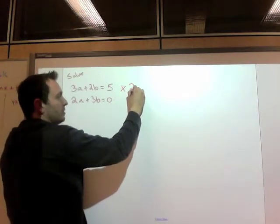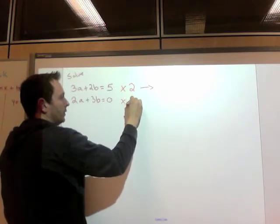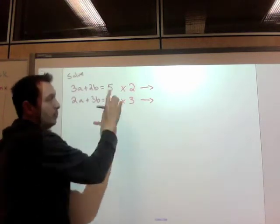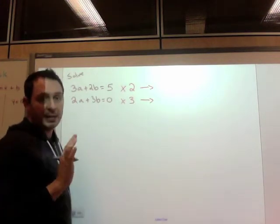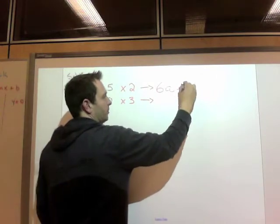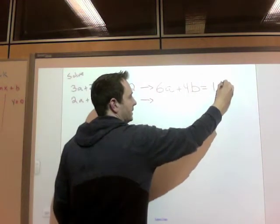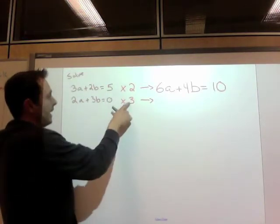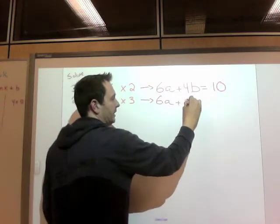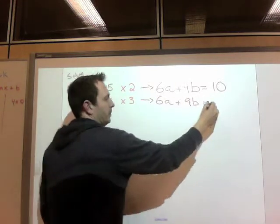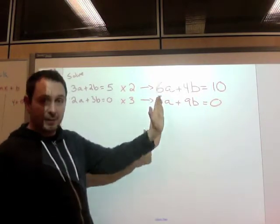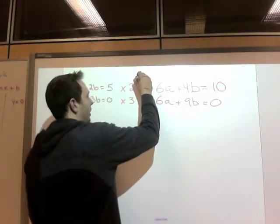2 and 3 have a common multiple of 6. So if I times row 1 by 2, and I times row 2, or equation 2 by 3, I will end up getting 6a's for both of these. So remember, the common mistake is to forget to multiply each piece. You need to multiply each term. So 2 times 3a is 6a. 2 times 2b is 4b. 2 times 5 is 10. So I've done each piece. Now the second row by 3. 2a times 3 is 6a. 3b times 3 is 9b. 3 times 0 is 0. So what I've done now is I now have coefficients that are the same for my a's. That is step 1 done.